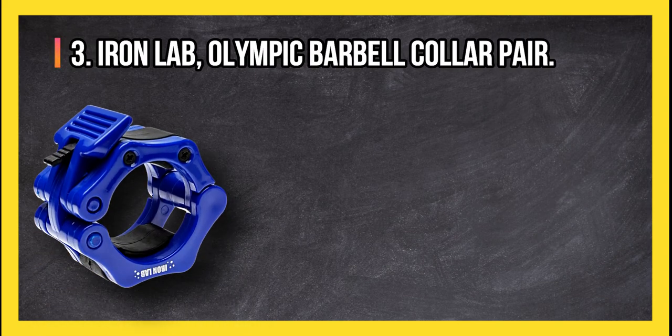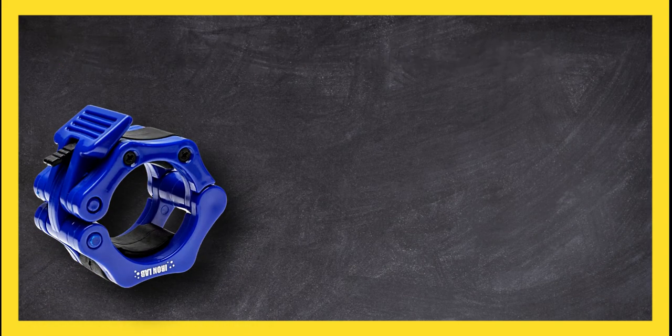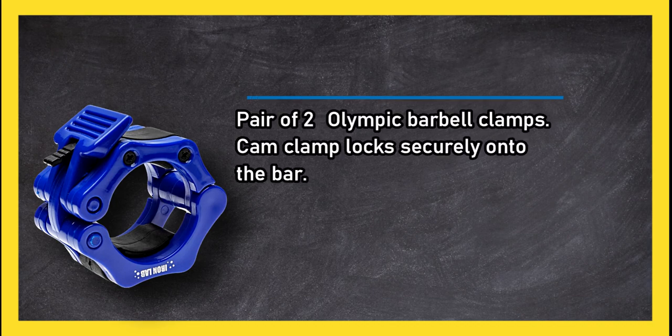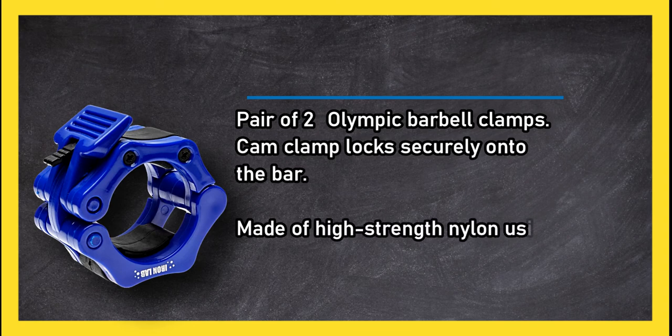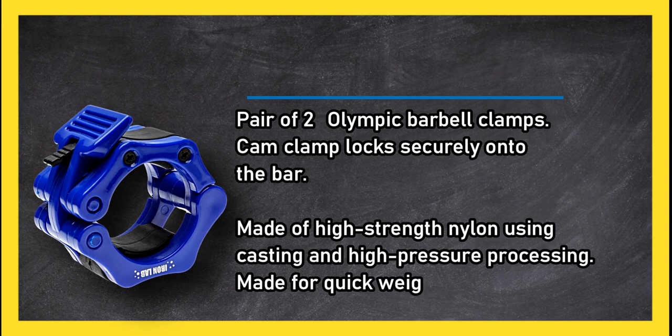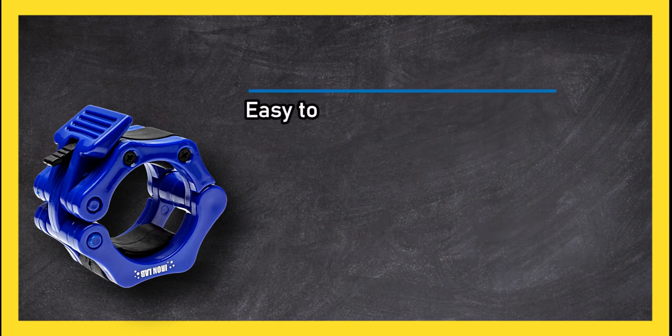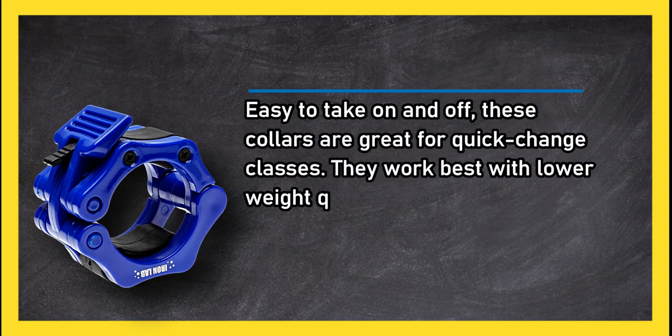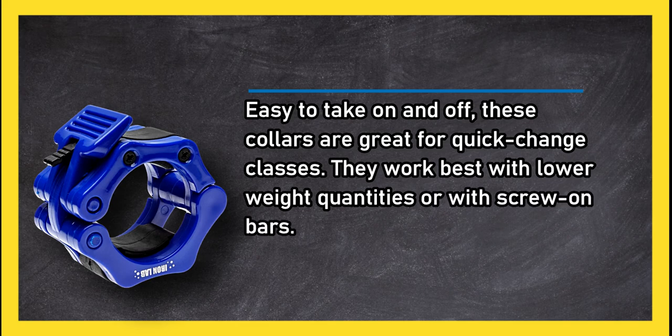Olympic Barbell Collar, pair of two-inch Olympic barbell clamps. Cam clamp locks securely onto the bar, made of high-strength nylon using casting and high-pressure processing. Made for quick weight changes, easy to take on and off. These collars are great for quick-change classes and work best with lower weight quantities or with screw-on bars.